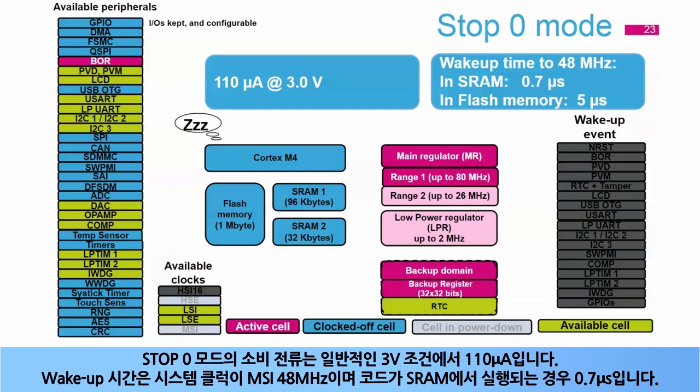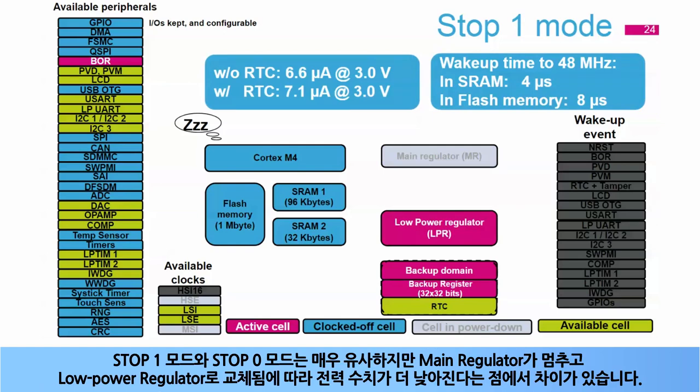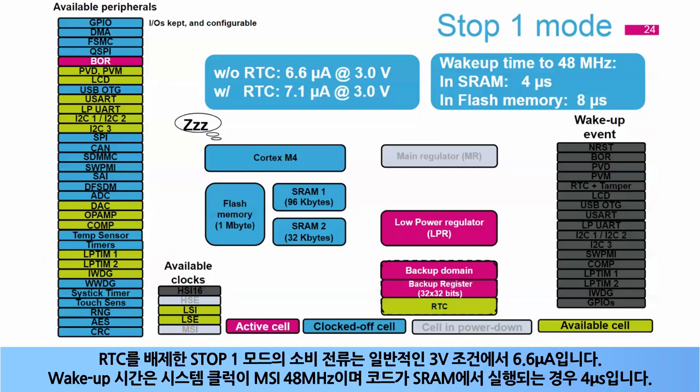Stop 1 mode is very similar to stop 0, except that power figures are much lower as the main regulator is stopped and replaced by the low-power regulator. The stop 1 mode consumption without RTC is 6.6 microamps typical at 3 volts. The wake-up time is 4 microseconds when the system clock at wake-up is MSI at 48 MHz and code is executed from SRAM.